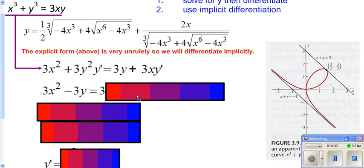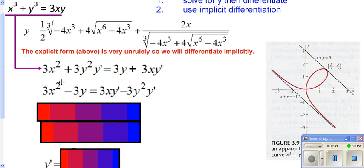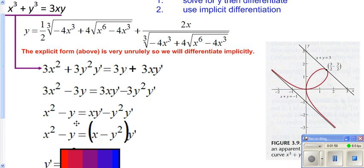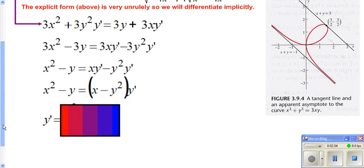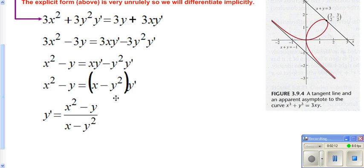Now go ahead and get the y primes on one side and the non-y primes on the other. My 3y did not have any y primes, so I took it to the left side. This term had a y prime, so I took it to the right side. Factor out your y prime on the right side and divide by 3 to make it easier. Then finish getting y prime by itself by dividing by what's in the parentheses — and there's your derivative.